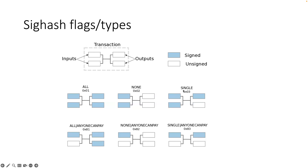SINGLE needs a bit of explanation. When you sign an input, you map it to the output at the same position. For example, if we're talking about the first input, SINGLE means I only cover the output at index one. If I'm talking about the signature in the second input, the covered output is at index two. So SINGLE — the signature covers the output at the same index as the input.